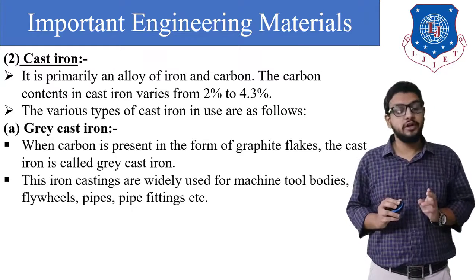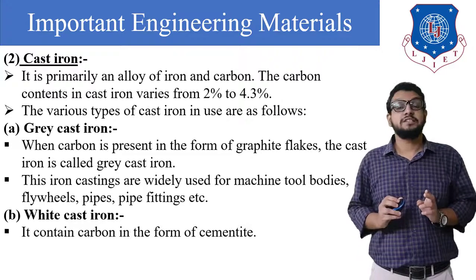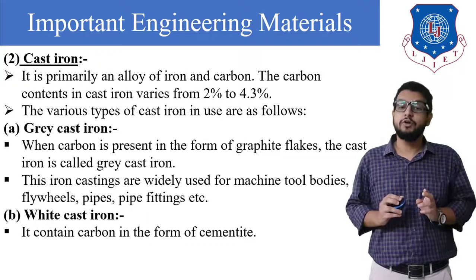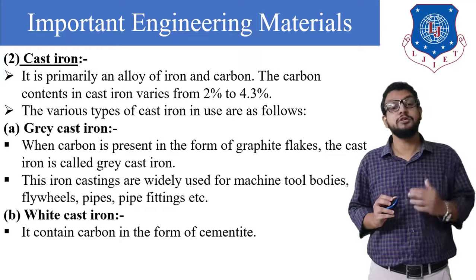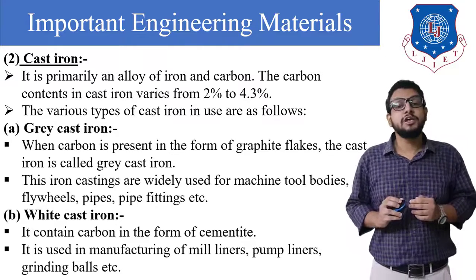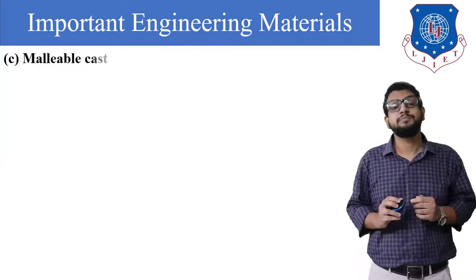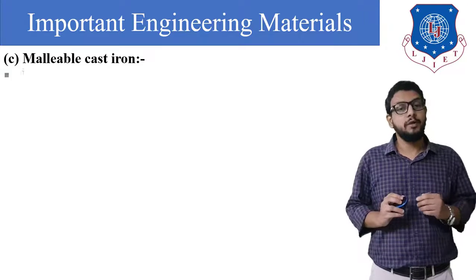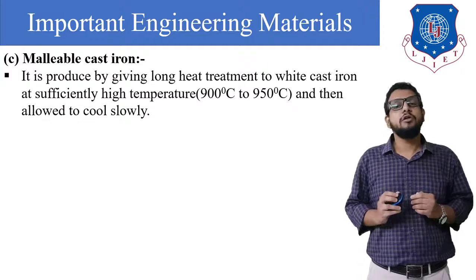The next type of cast iron is white cast iron. It contains carbon in the form of cementite, because of which the color is white. It is used in manufacturing of mill liners, pump liners, grinding balls, etc. The next type of cast iron is malleable cast iron.